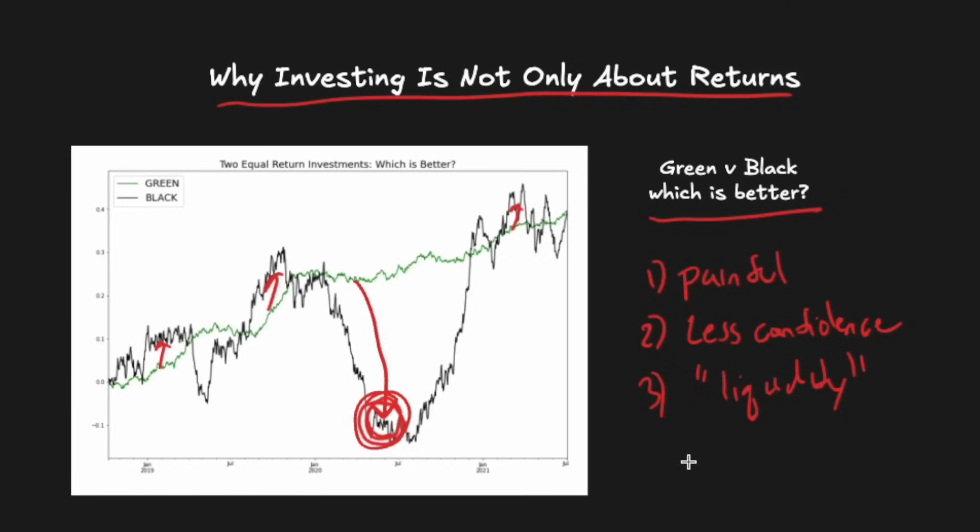By now, many will recognize that the wiggles here actually represent risk, and we can answer our initial question a lot more directly. Black is a worse investment than green, despite having returned the same, because it took on a lot more risk to get that return. We need a performance metric that reflects this, because simple percentage returns clearly fail.